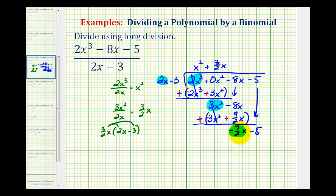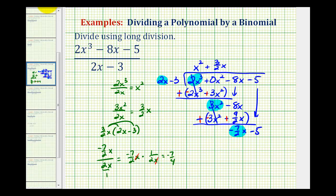We want to divide negative 7 halves x by 2x, which remember is the same as multiplying by the reciprocal. So we put this over 1, that's equivalent to negative 7 halves x times 1 over 2x. These x's simplify out and we're left with negative 7 fourths, which would be our next term in our quotient.